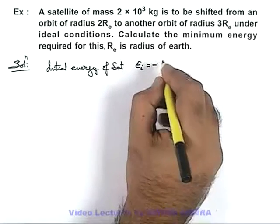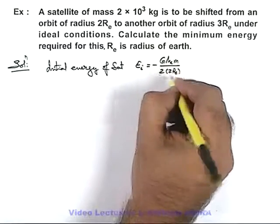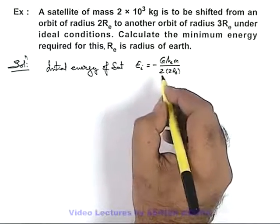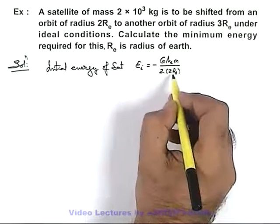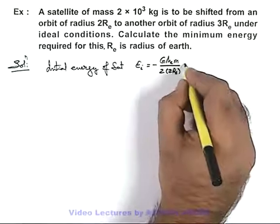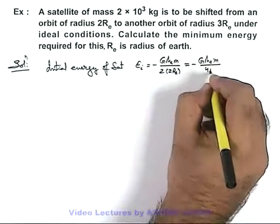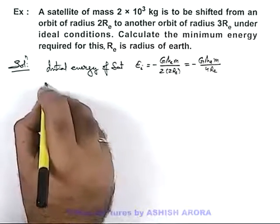That is minus GMₑm over twice of 2Rₑ. As we know that total energy is minus GMₑm by twice the radius of the satellite orbit, so this can be given as minus GMₑm over 4Rₑ. That is the initial energy of satellite.